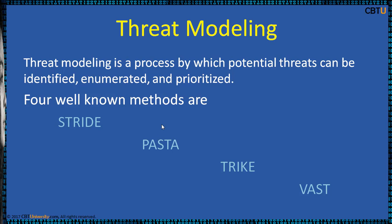Threat modeling helps in identifying the high-value assets, assets vulnerable to attack, and possible tracking of attack vectors. There are four well-known methods of threat modeling: Stride, Pasta, Trike, and VAST.